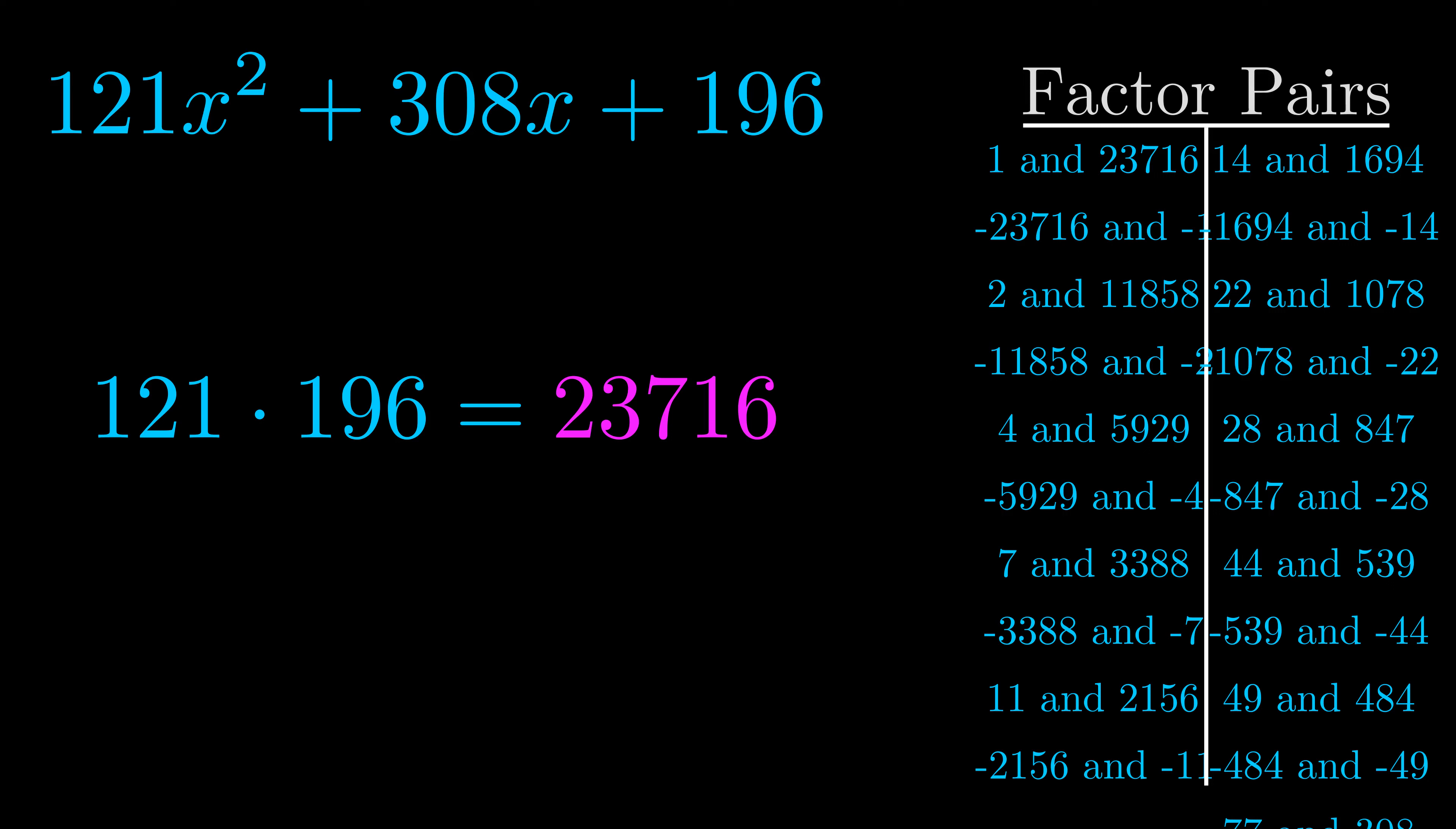The b value is the coefficient on the x term. That's the middle term, the one that we haven't done anything with yet. And really, this is the only factor pair that we need.